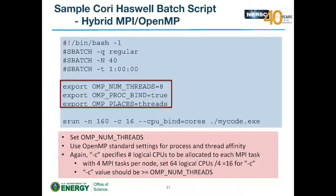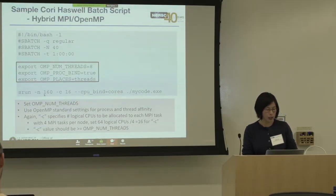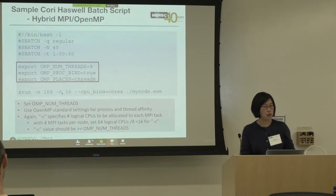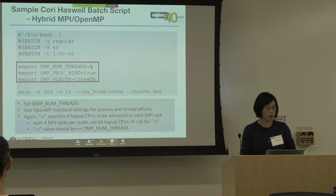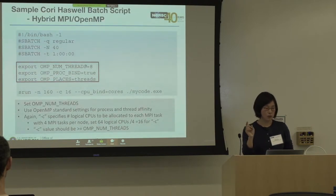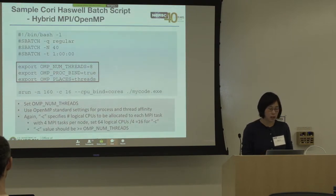For hybrid MPI/OpenMP, set the number of OpenMP threads and use OpenMP standard settings for affinity. The '-c' value must be greater than or equal to the number of OpenMP threads. If '-c' is twice the number of OMP threads, it means you're binding OpenMP threads to physical cores, not using hyper-threads. We recommend using OMP_PROC_BIND and OMP_PLACES for affinity control.